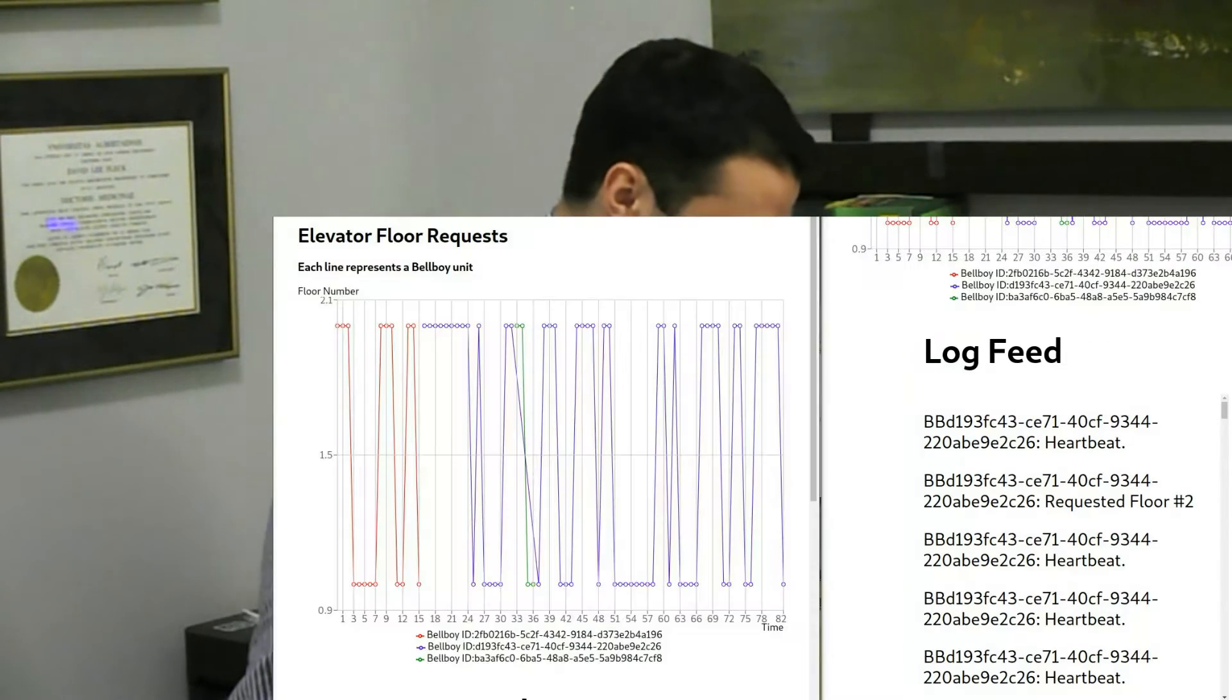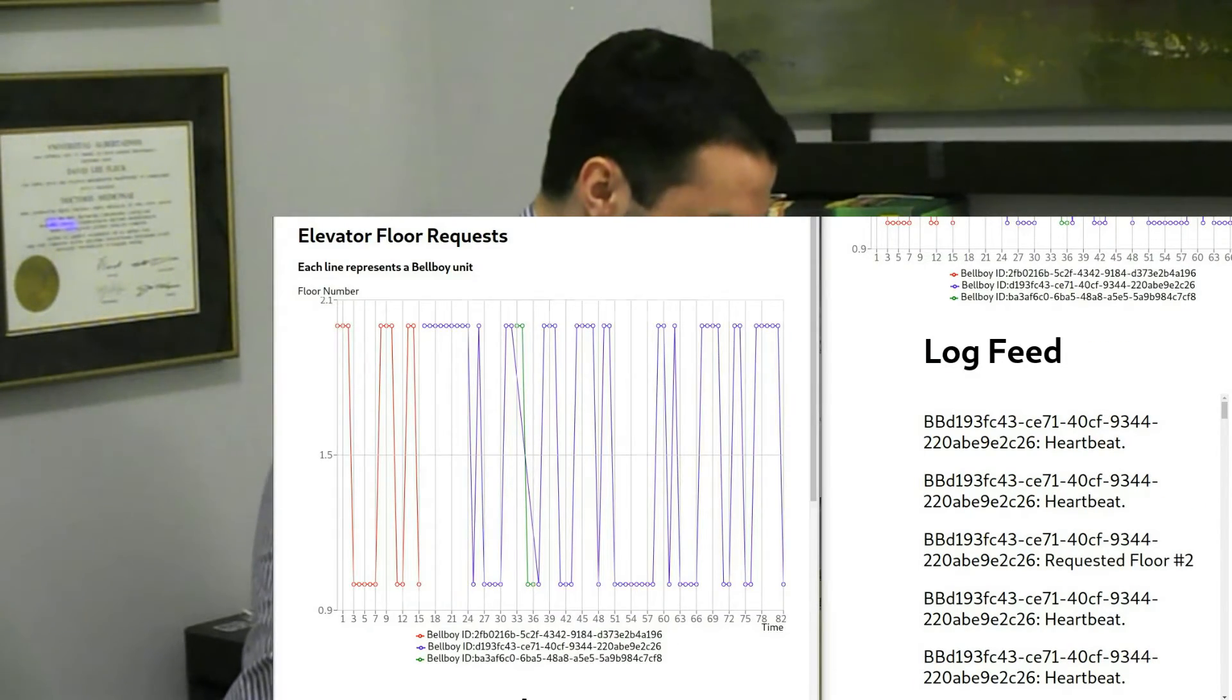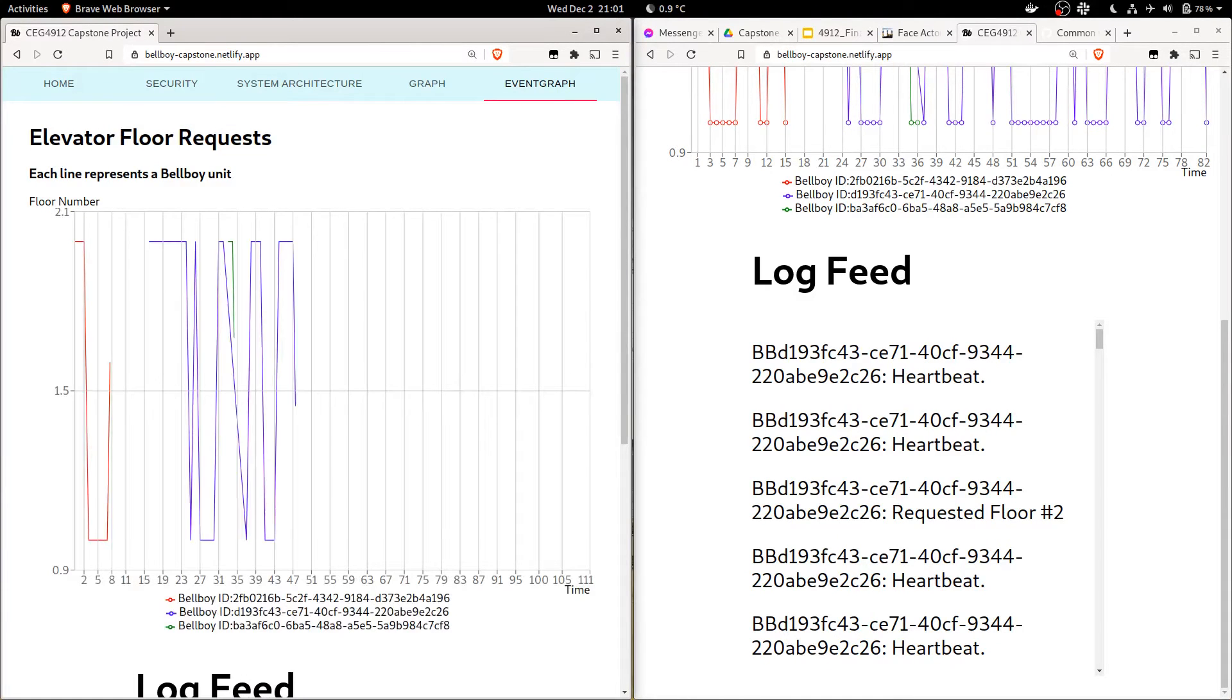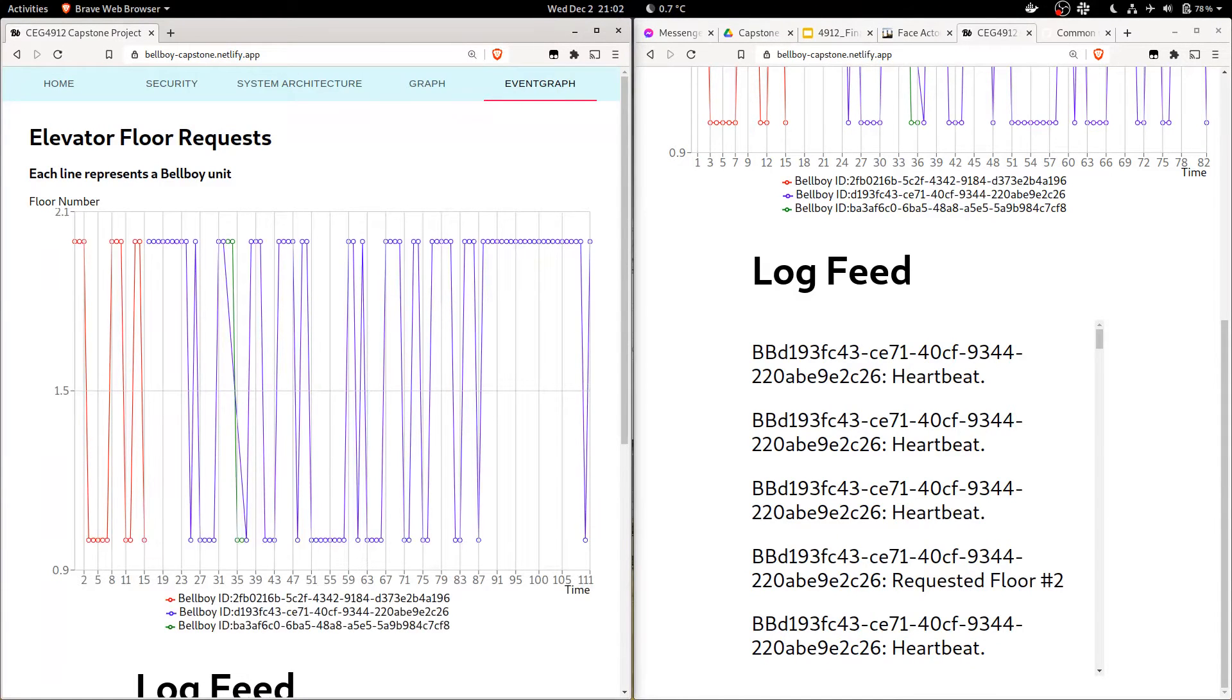Lastly, we're just going to go and refresh this page. We probably could have just gone back and forth. We can see that at the very end here we've got a request for floor one and a request for floor two.